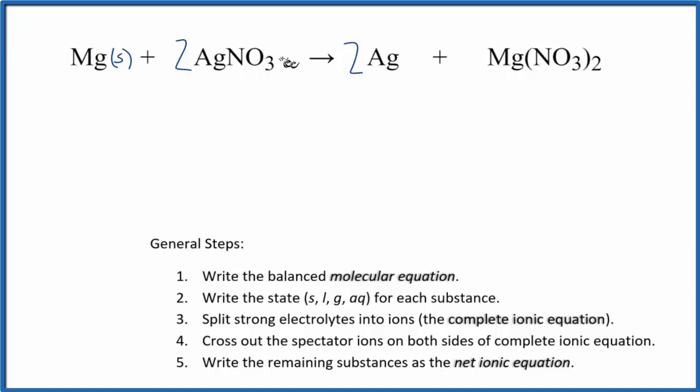Silver nitrate. Nitrates are very soluble. So we're going to put an Aq for that. Aqueous, it's dissolved in water. On the products, silver, that's a solid. And then magnesium nitrate, again, nitrate's very soluble. Put aqueous. And that means it's going to dissolve in water, dissociate into its ions.